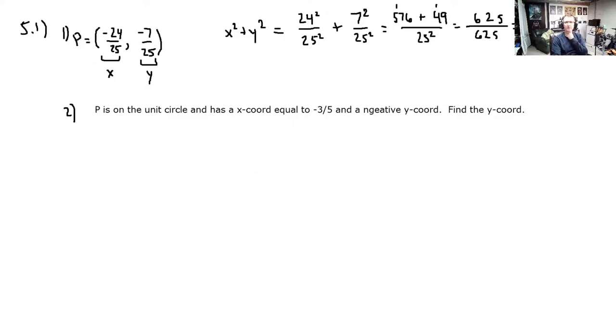So number 2 is point P, right? We know its x-coordinate. It's negative 3 over 5. We don't know its y-coordinate. So we'll just put in a substitution variable there. We need to find that y-coordinate.